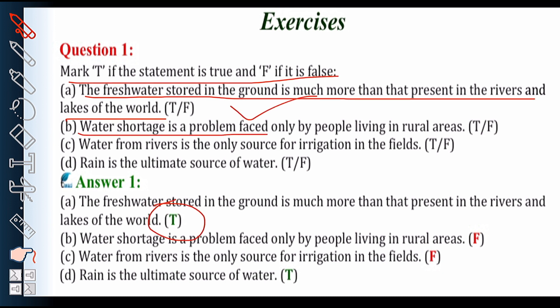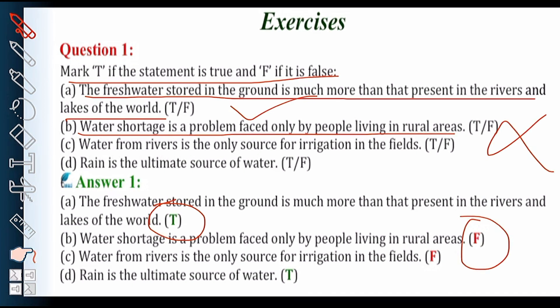Next part: water shortage is a problem faced only by people living in rural areas. The given statement is false because water shortage is a problem not only faced by people living in rural areas but also by people living in urban areas as well.